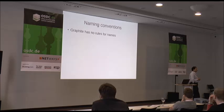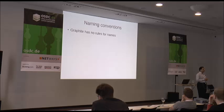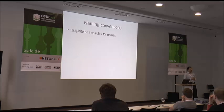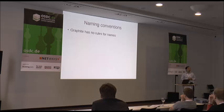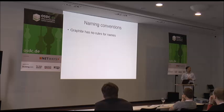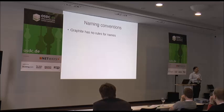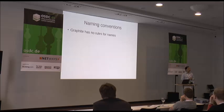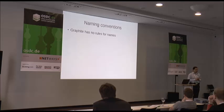Naming conventions: graphite has no rules — by design, people are supposed to do what makes sense to them. So they will do things that don't necessarily make sense to you. We have people who go 'this is useful stuff' — but your name makes no sense. Is it monitors.something? Is it nagios.something? Make up your mind, because everybody has their own opinion.